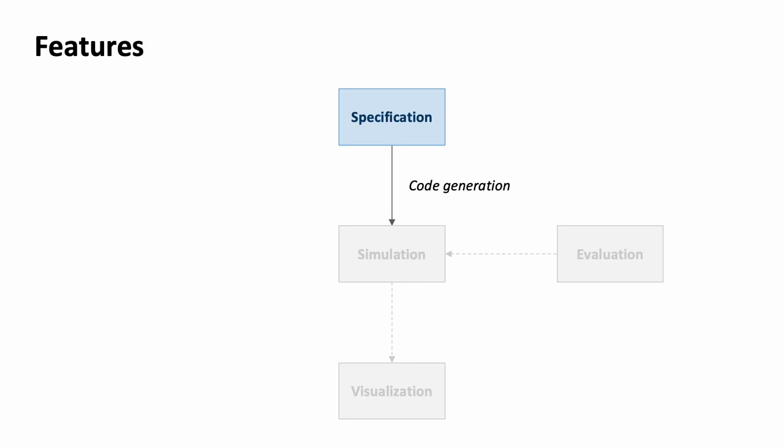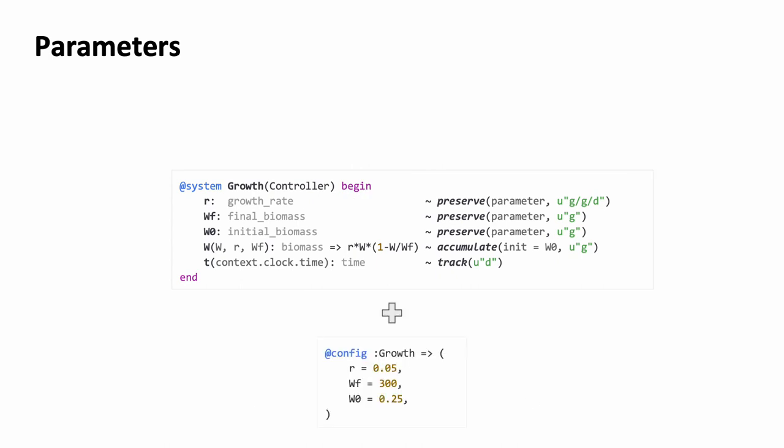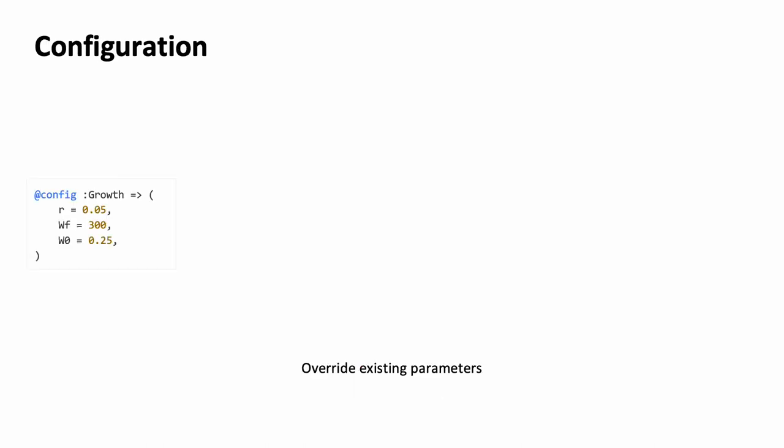Once the model is ready, we can run simulations. Parameter values can be directly written inside the model or preferably stored in a separate configuration for better management. Configuration objects are created by config macro, and they support simple operations like overriding or merging multiple layers of configurations, which is handy for organizing complex scenario-driven simulations.